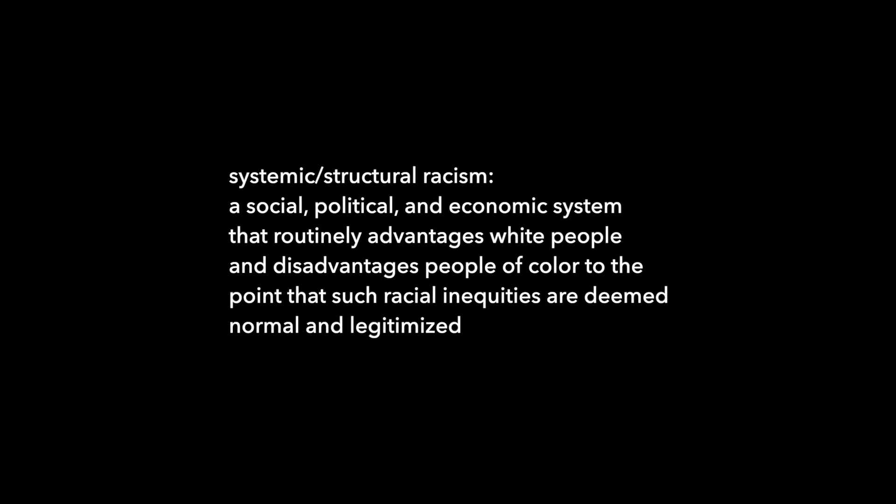Next, we have systematic and structural racism. Systematic and structural racism is a social, political, and economic system that routinely advantages white people and disadvantages people of color to the point that such racial inequities are deemed normal and legitimized. What we're seeing now with systematic racism is that people are racially profiled by cops.